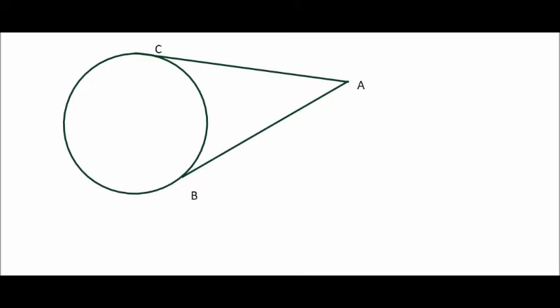So if we look at this diagram over here, because AC and AB are tangents, because they touch at exactly one point and they come from a common point over there, their lengths would be equal.